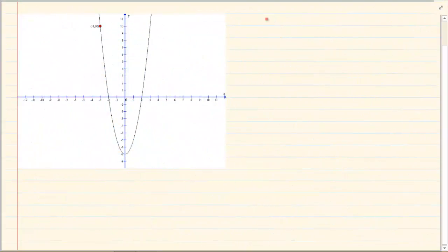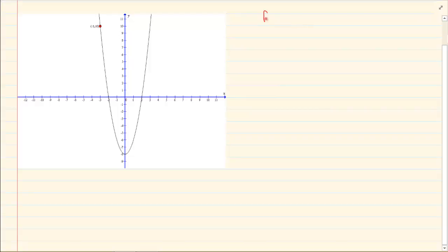Now from your previous drawings of graphs you know that f is equal to ax squared plus q. Q was your turning points.